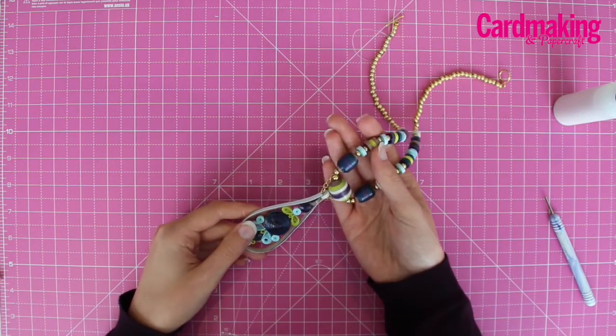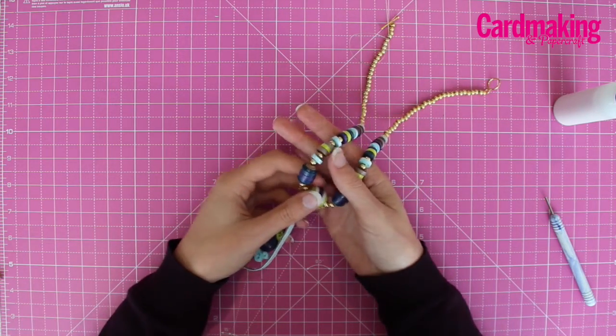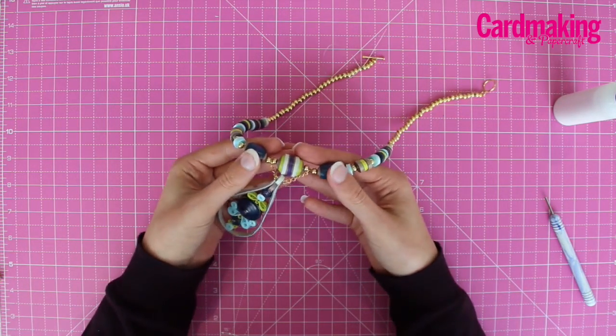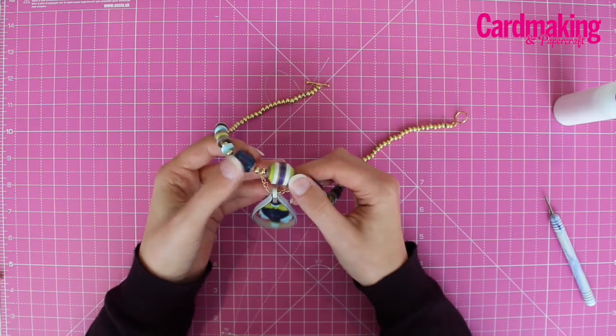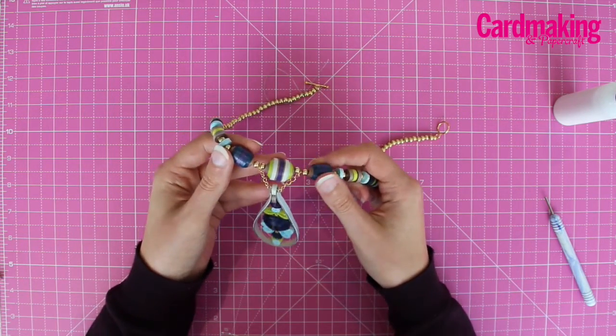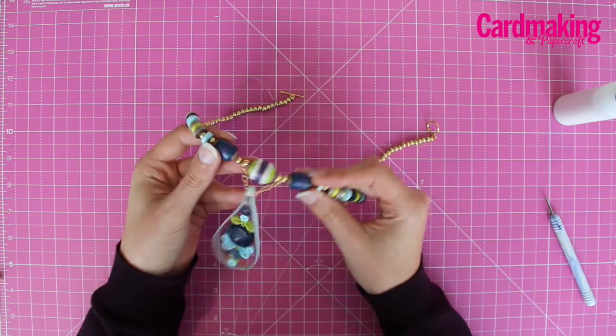This video will show you how to create the quilled beads for this necklace from issue 160 of Card Making and Papercraft magazine. I'm going to be making this large bead from the center, but you'll use the same technique to make these two smaller beads on either side.